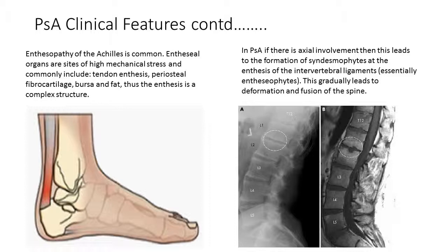In psoriatic arthritis, if there is axial involvement, this leads to the formation of syndesmophytes — similar to osteophytes but at the enthesis of the intervertebral ligament, essentially enthesiophytes. This gradually leads to deformation and fusion of the spine as these bony proliferations cause fusion of the spinal column. Physiotherapists use things like the Barstaff score to monitor this, and are integral in preventing destruction and impacts on quality of life by keeping people moving, active, strong, and functional.